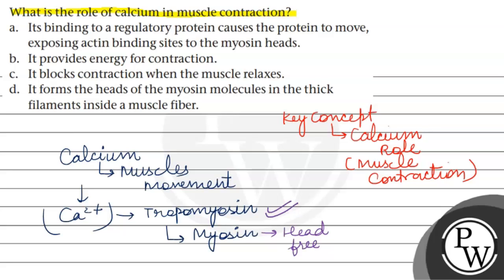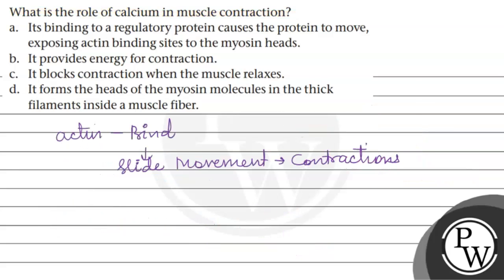The head of myosin is free and it binds to the binding site of actin. The binding site is present for myosin, and it binds to actin, causing the contraction of the muscle.